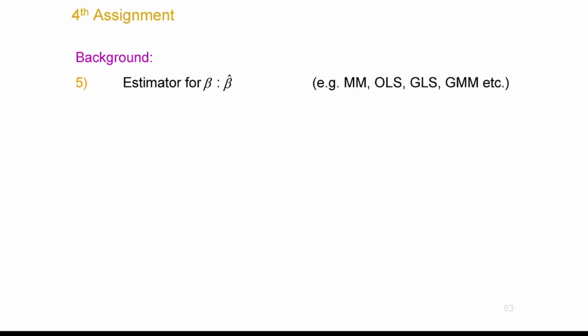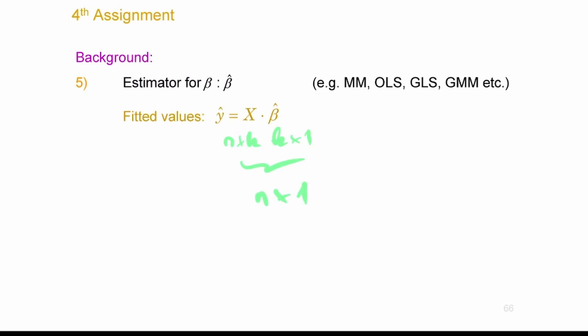The estimator of beta — the parameter vector — is called beta hat. There are different estimation methods: OLS, method of moments, maximum likelihood estimation if the noise is assumed normal, GLS (generalized least squares), and generalized method of moments. One of them is OLS, which I will define in general terms. The fitted values are calculated from a matrix product: the design matrix (N-by-K) multiplied by the parameter vector (K-by-1) gives an N-by-1 vector.